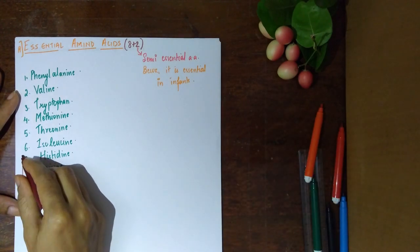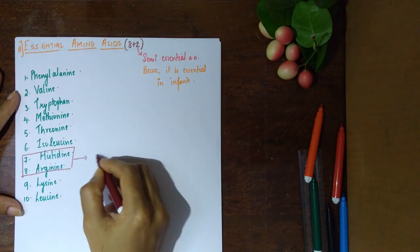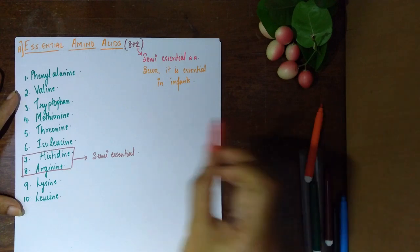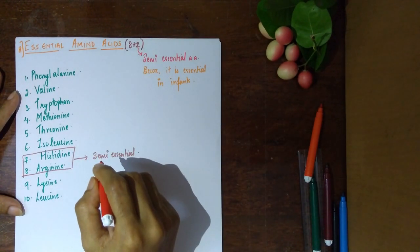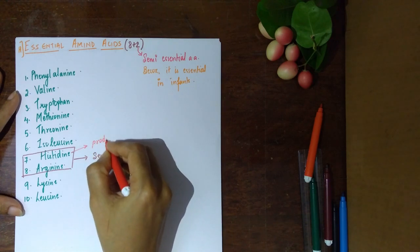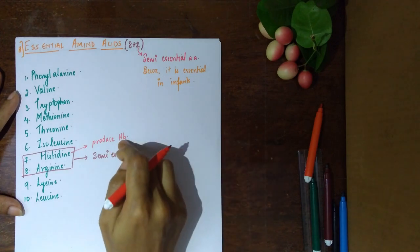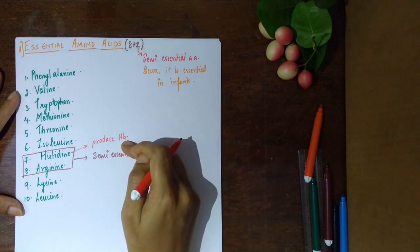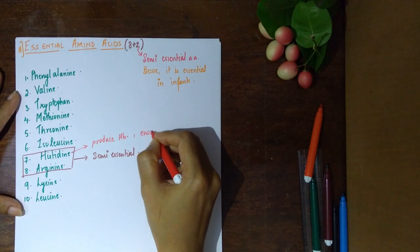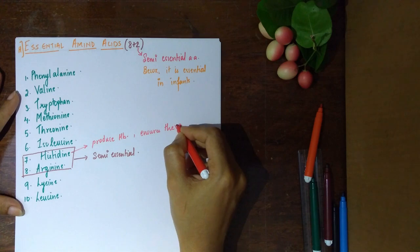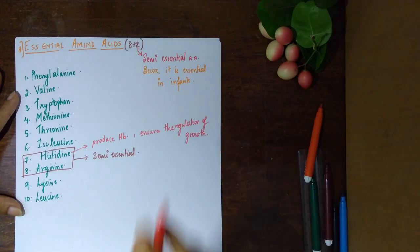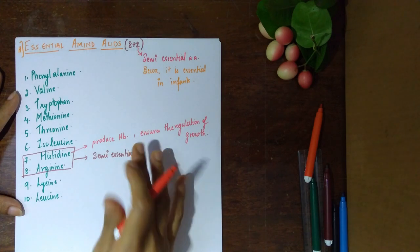These semi-essential amino acids remain essential only in the early stages of life. Histidine produces or helps to produce hemoglobin, which is a carrier protein for oxygen. It also ensures the regulation of growth — growth patterns are regulated via histidine. These are some of the important functions of histidine.